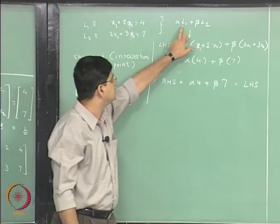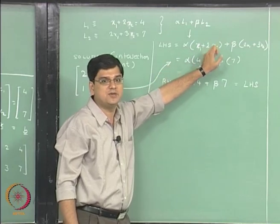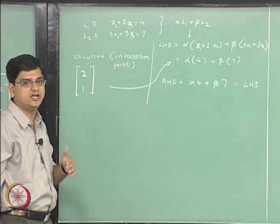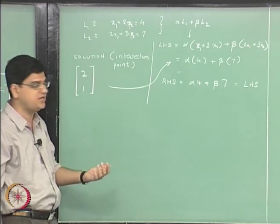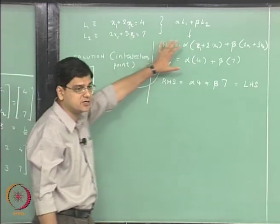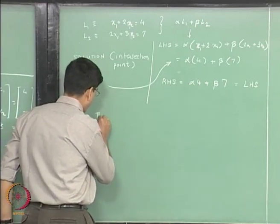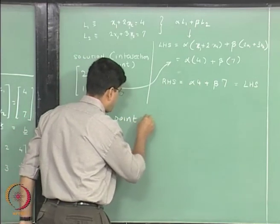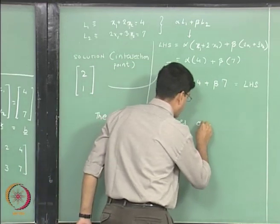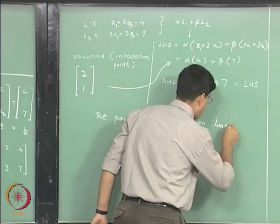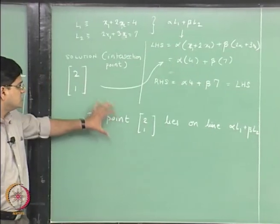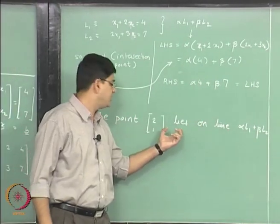But it also satisfies the equation alpha L1 plus beta L2, which means that for any scalar values alpha and beta, including alpha equal to 0 or beta equal to 0, the point also lies on that particular line.